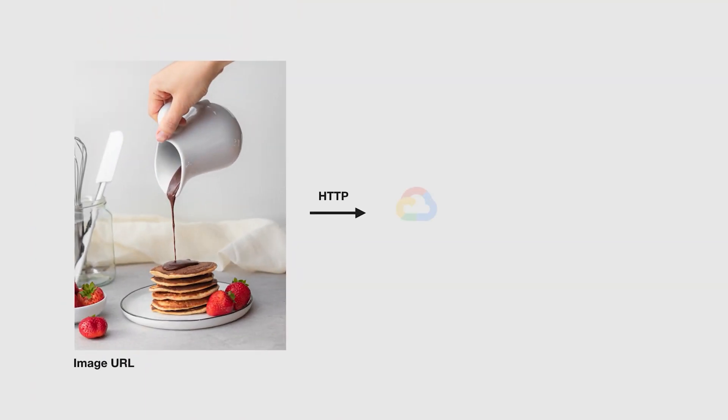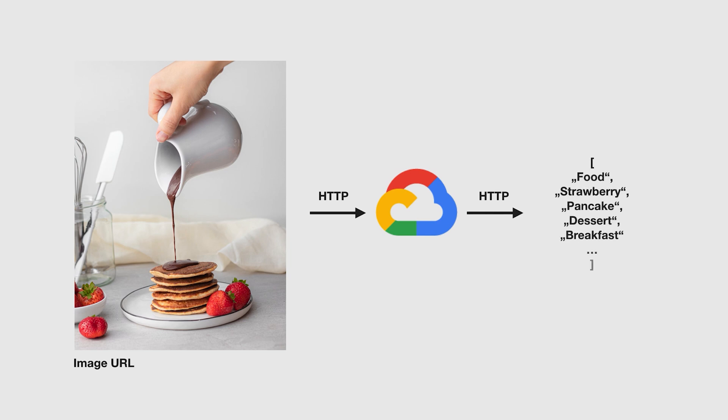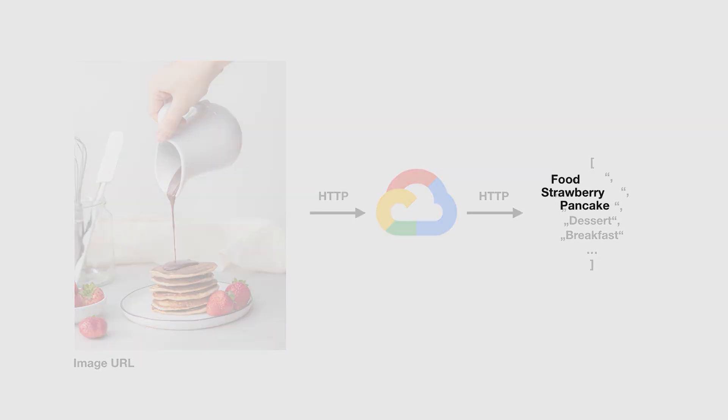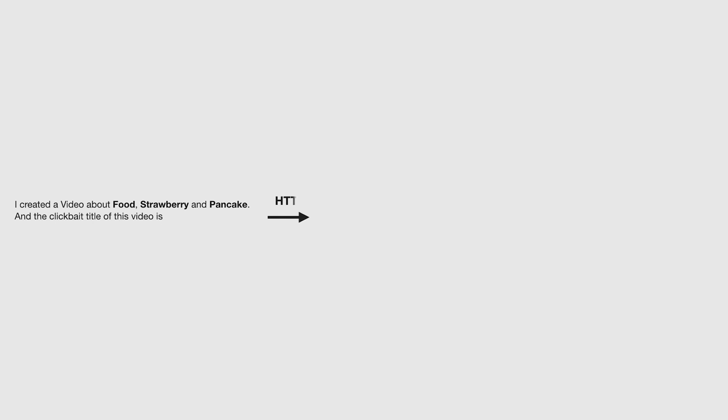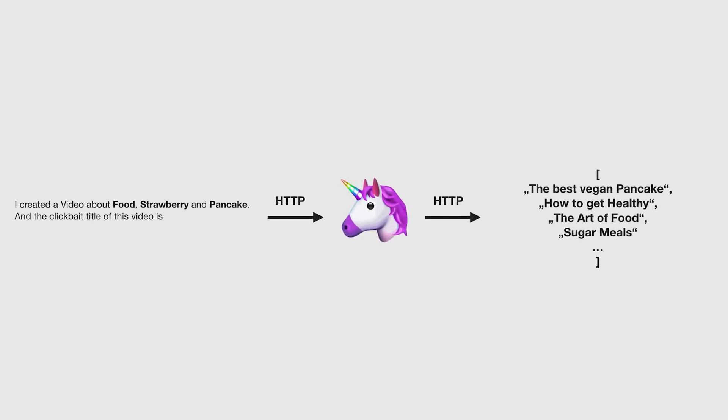This is now the next morning — it was quite a long night, but the progress was very good. We take our nice little pancake image and send it to the Google Cloud service. From there, we receive several tags generated from the model. We take the top three tags and plug them into a sentence, which is sent to the autocomplete model, and — ta-da — we get our titles.